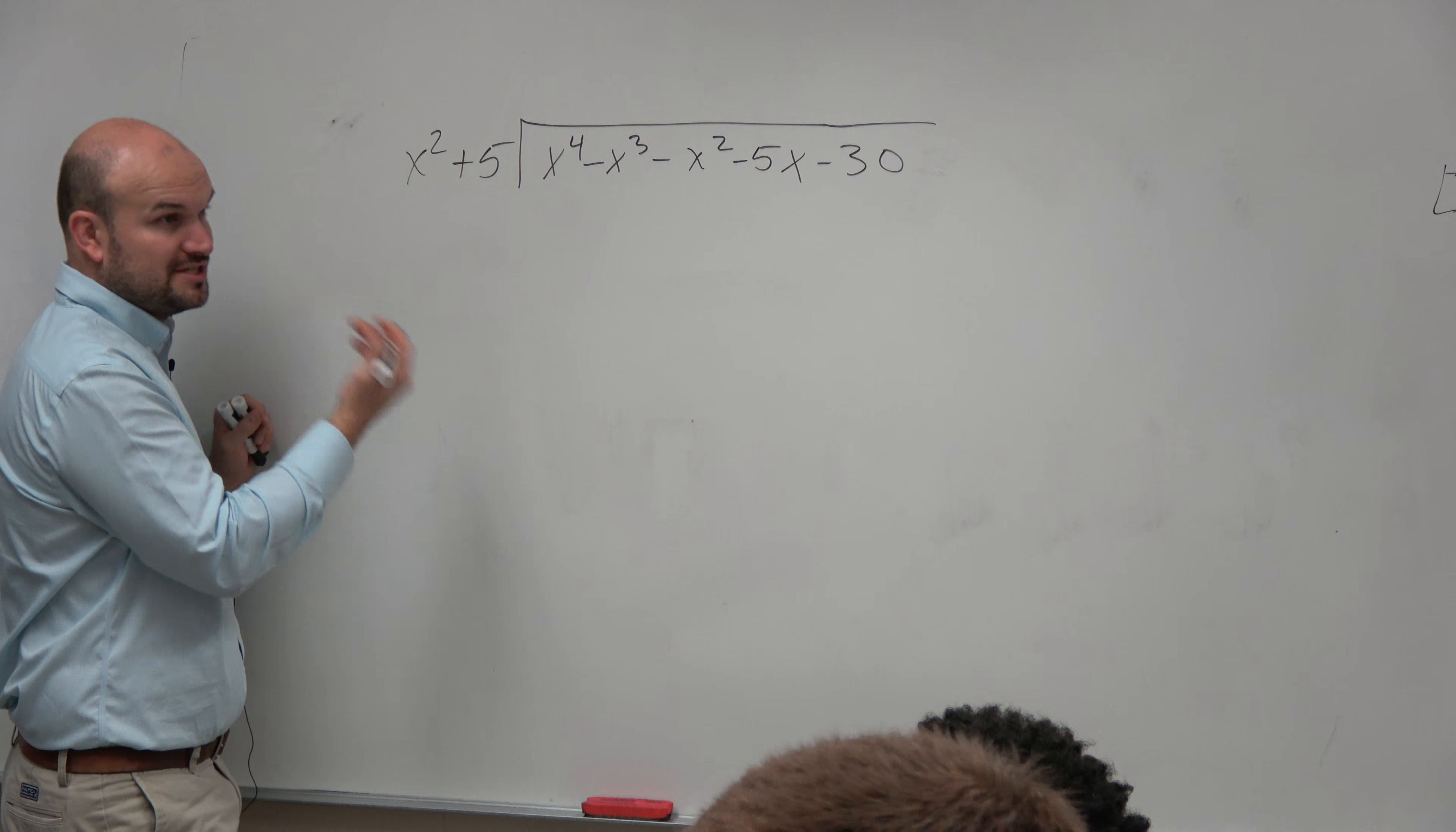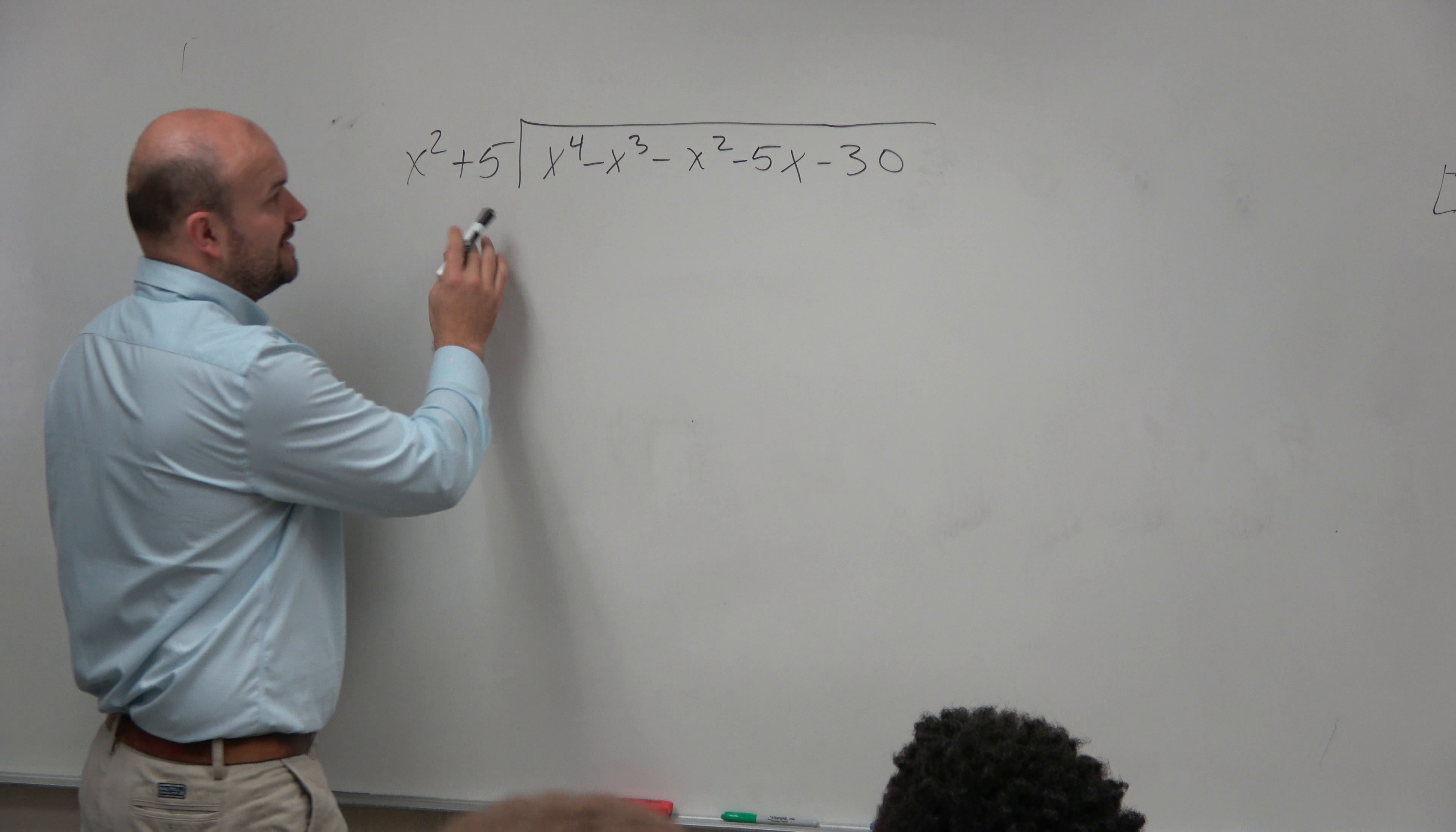So again, if I'm asking you guys to find all the zeros, and we want to check first thing if this is a factor. So if we're going to test if this is a factor, first thing we're going to do is we're only dividing with our common term, making sure everything's in powers, right? And we're good with that.